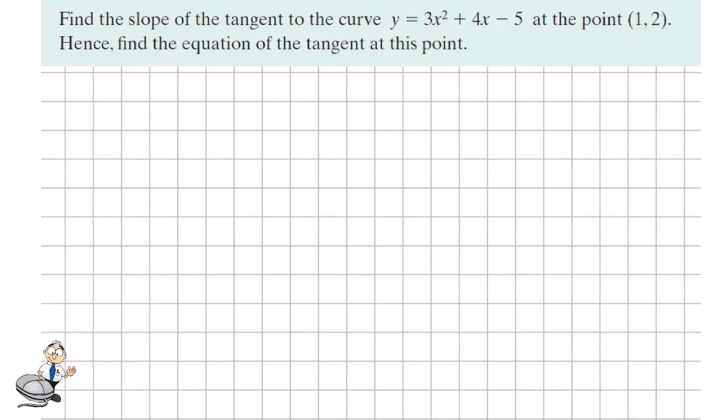Find the slope of the tangent of the curve y = 3x² + 4x - 5 at the point (1, 2) and hence the equation of the tangent at this point.